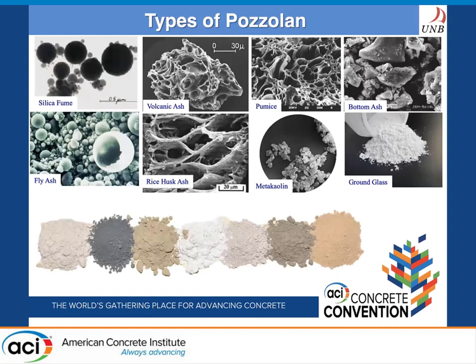There are a wide range of pozzolans that can be used to partially replace Portland cement in concrete, and over the past few decades, some of these materials have shown great improvement in the long-term performance of concrete, provided these materials are used in adequate proportions.